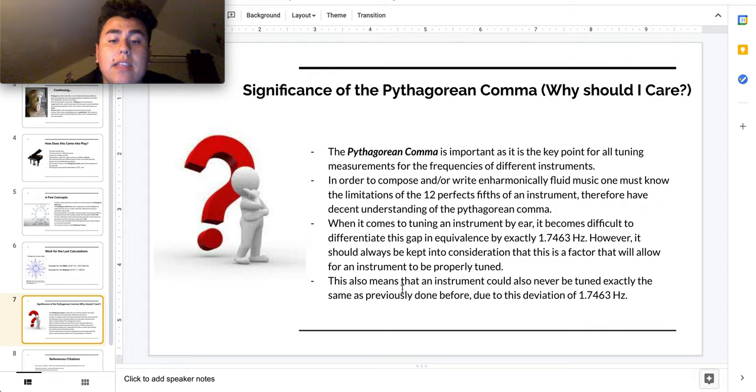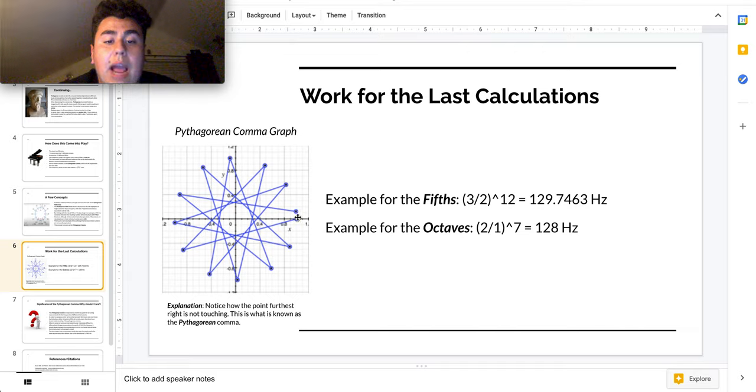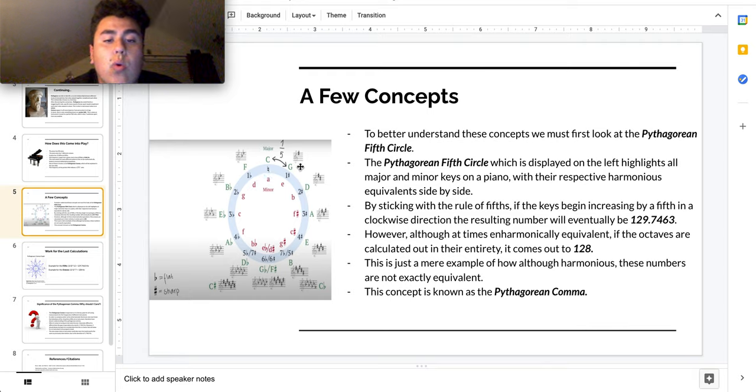At the end of the day, this also means that an instrument could also be never tuned exactly the same as previously done before due to this deviation of 1.7463 hertz. And when it's referring to that, it's referring to this little gap right here in the image. Yeah, obviously, I wrote like notice the furthest point is not touching. All of these are harmoniously equivalent. And if we go back to the graph, that would be major C, minor A, equivalent, equivalent, equivalent, equivalent, except for F sharp and A major. Those are supposedly inharmonically equivalent, but technically have a deviation that will never be the same. And that's what Pythagoras discovered.